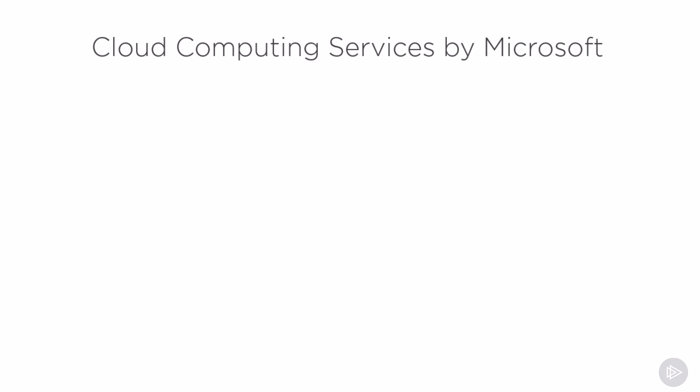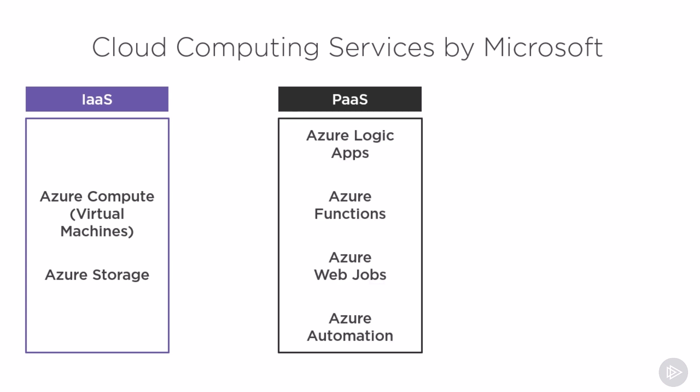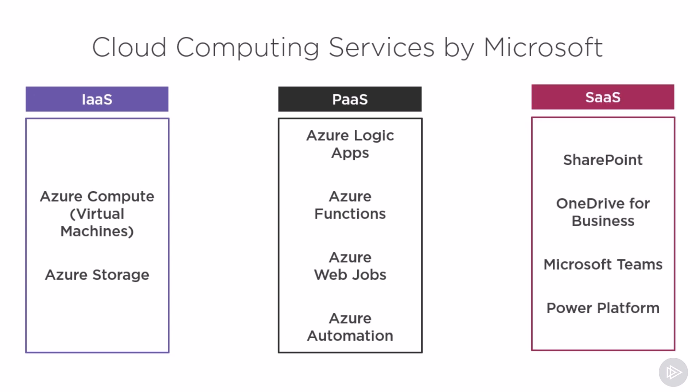If we focus only on Microsoft: in Infrastructure as a Service, we have Azure Compute — which is the name for virtual machines — and Azure Storage. In Platform as a Service, we have Azure Logic Apps, Azure Functions, Azure Web Jobs, and Azure Automation. In Software as a Service, we have SharePoint Online, OneDrive for Business, Microsoft Teams, and the Power Platform. Those are just a few examples — Microsoft has over a dozen services in each one of those categories.